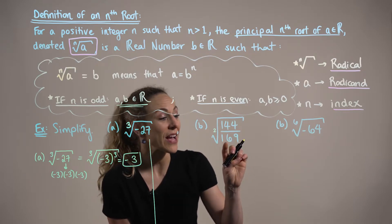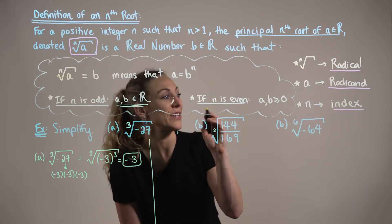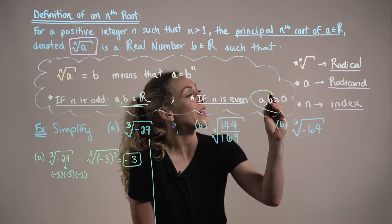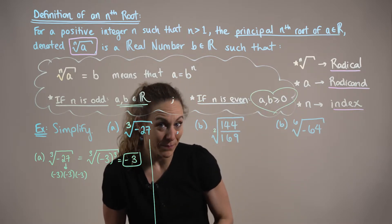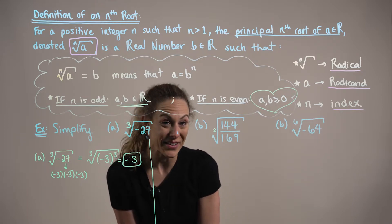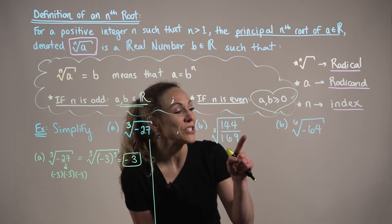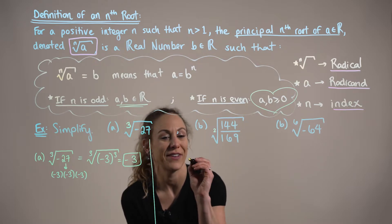Now, in this case, we have an even index. So, we need to be mindful that both real numbers a and b must be non-negative or greater than or equal to zero, which in this case, we do have.